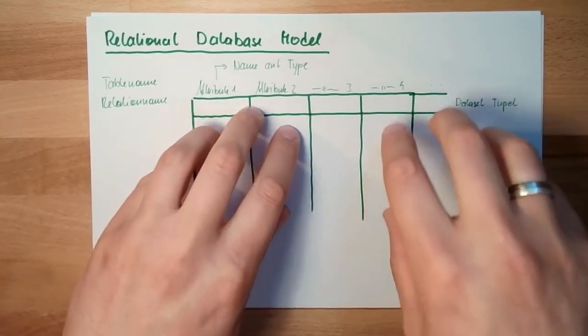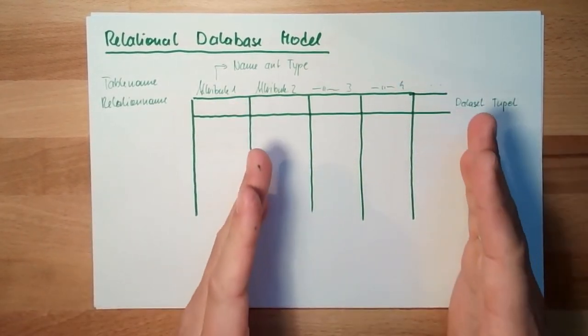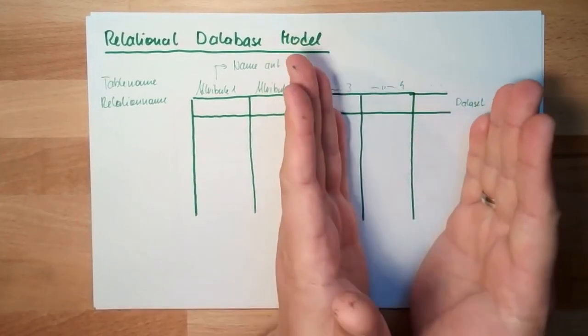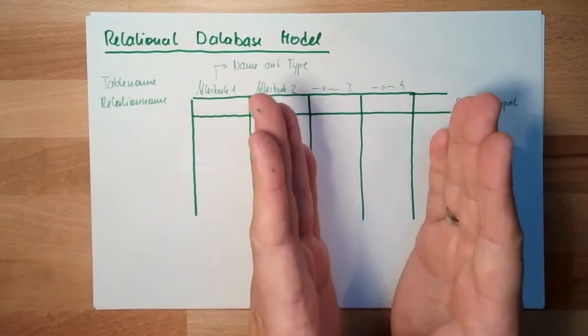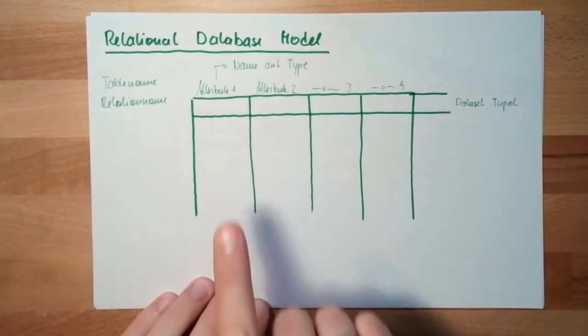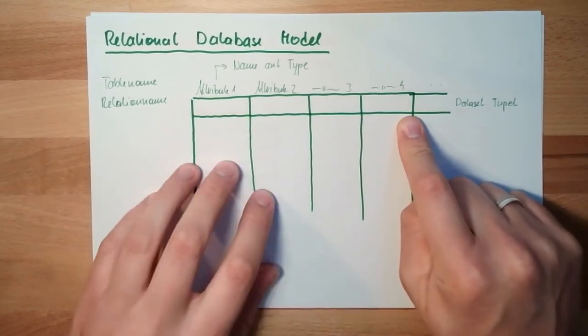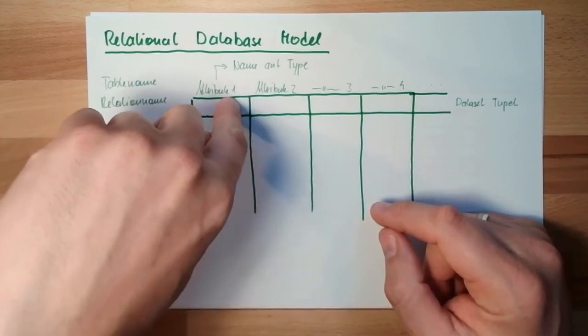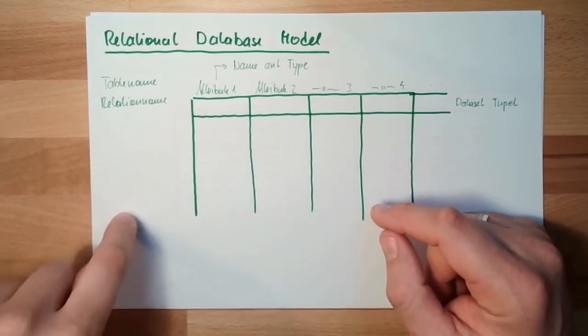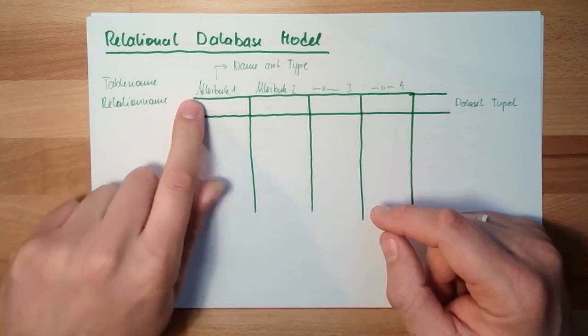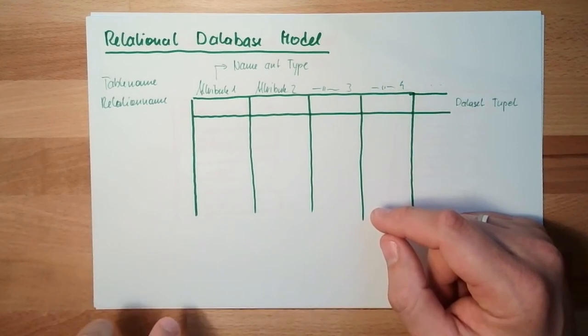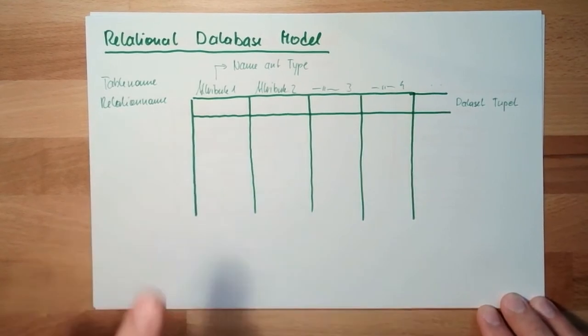So there are relations between tables and other tables. One attribute can point to another table. Say, look there, it's this. It's written here, just person. And in the person table is written given name, birthday. There can be relations.